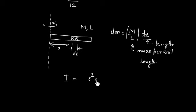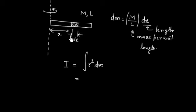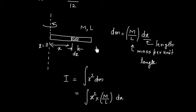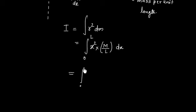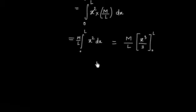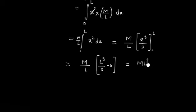Using the formula I = ∫R² dm, where R = x is the distance from the axis, we have I = ∫x² · (M/L) dx. We integrate from x = 0 to x = L. Taking M/L outside: I = (M/L) · [x³/3] from 0 to L = (M/L) · (L³/3 - 0) = ML²/3.